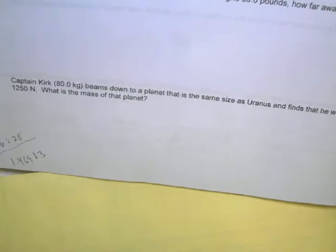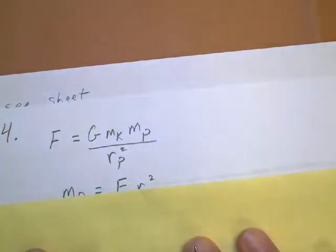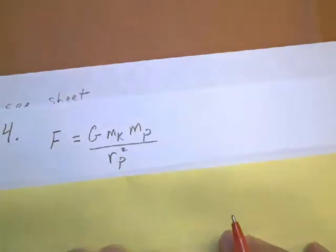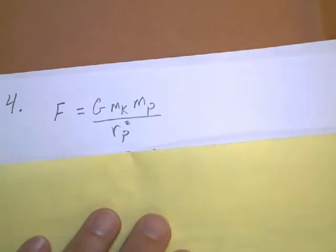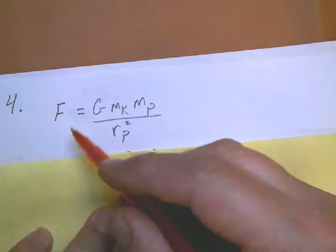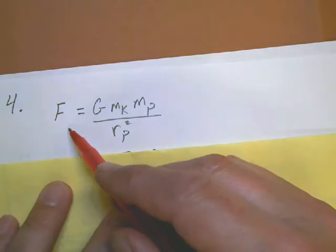Alright, sorry, I had to go get a pen. So again, using setting up the equation. It always helps to start first with it so you keep track of what's going on. The force exerted by the planet on Kirk would be G times the mass of Kirk times the mass of the planet divided by the radius squared of the planet.